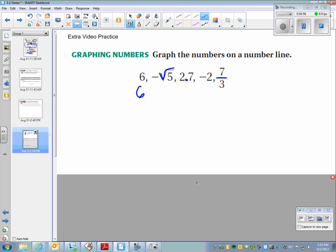So 6 as a decimal, it's the same. If you go on your calculator, negative square root of 5 is negative 2.45. 2.7 is already a decimal. Negative 2 is already a decimal sort of number. And 7 thirds as a decimal is 2.33 going on forever.